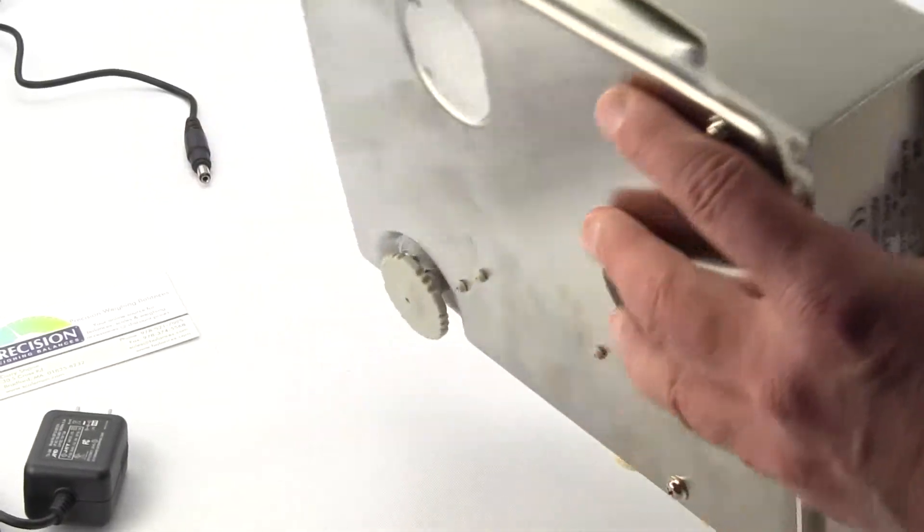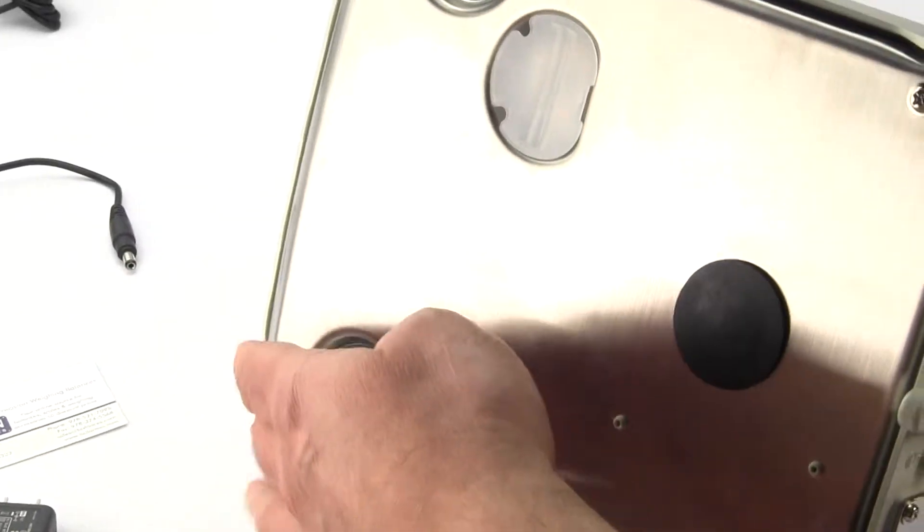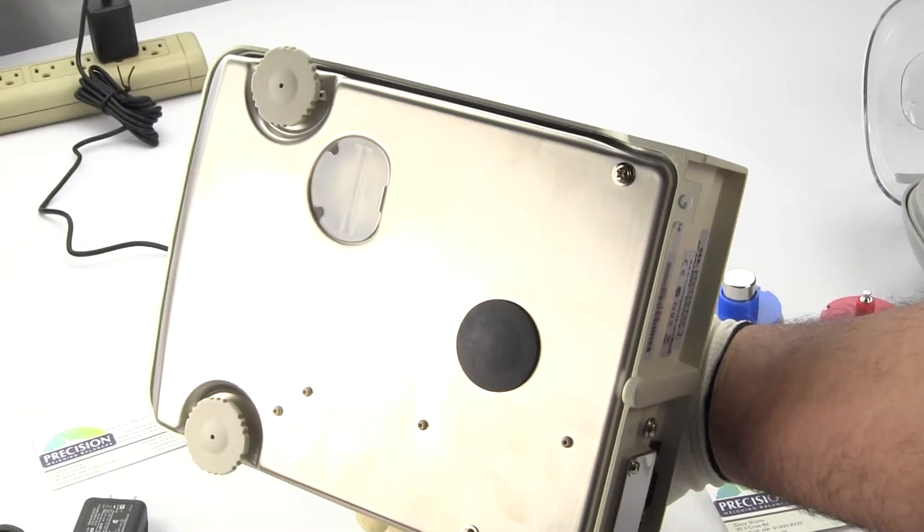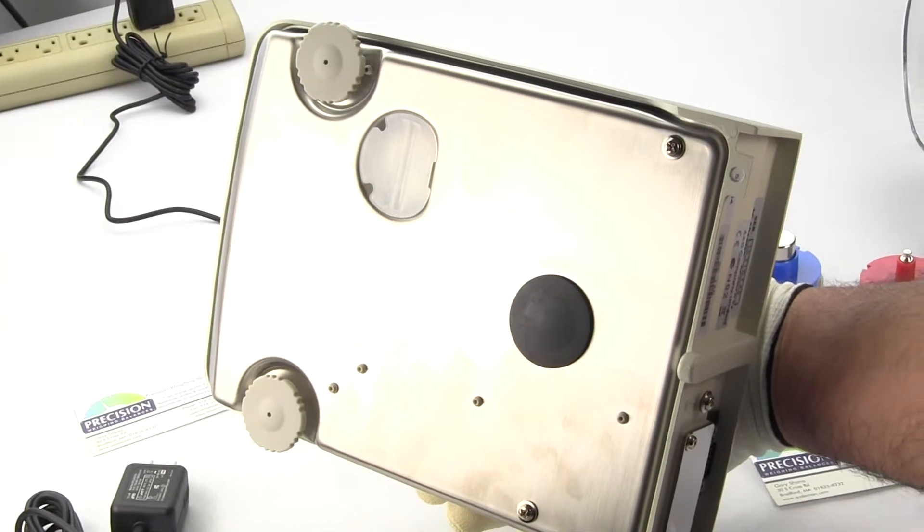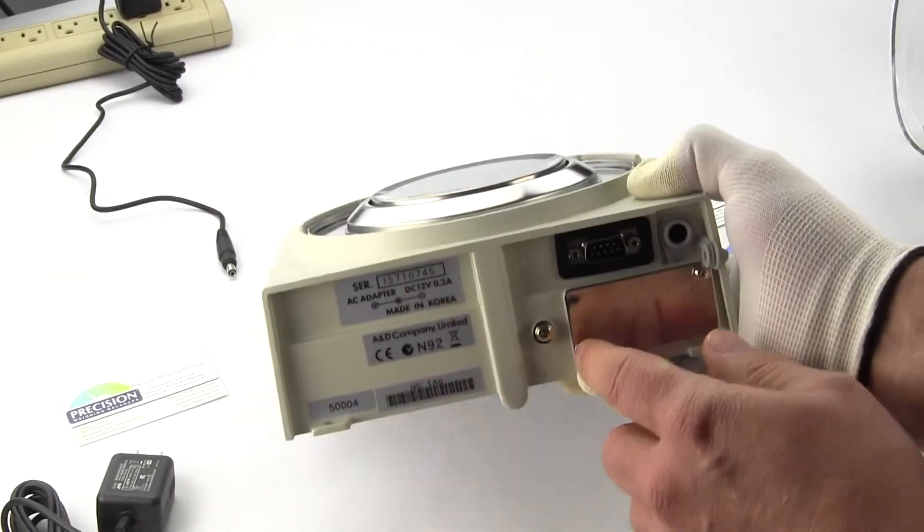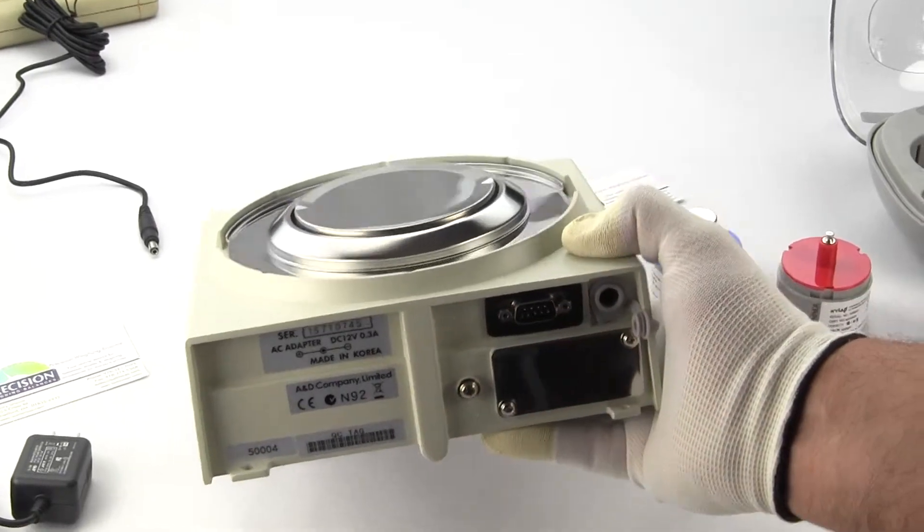On the bottom of the balance you have two adjustable feet. This here is an underhook for beneath weighing for like specific gravity. You also have on the rear of the balance we have a grounding lug for static electricity.